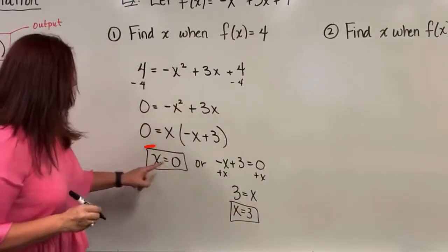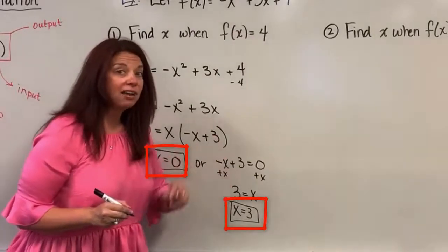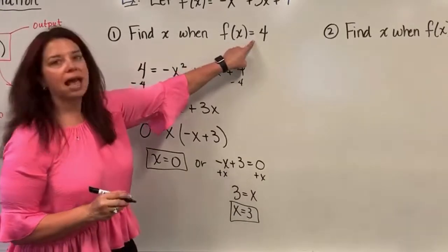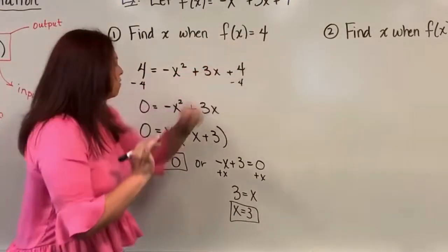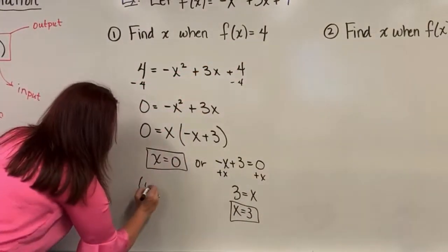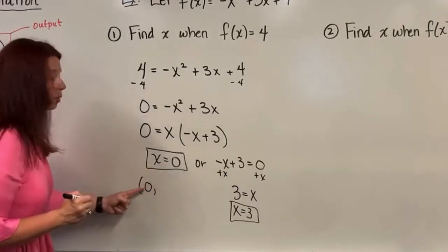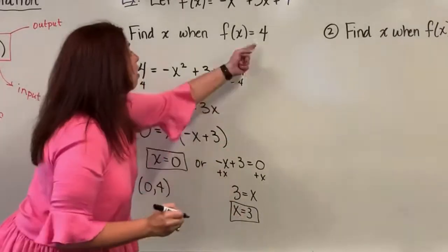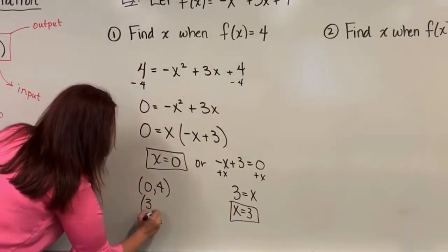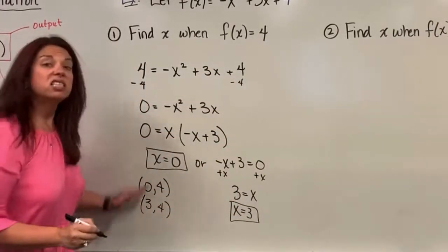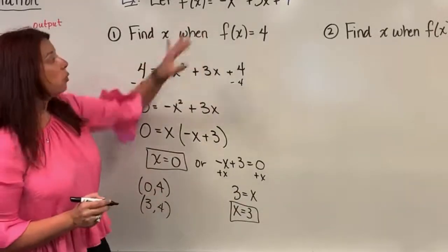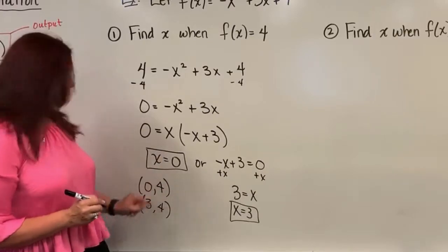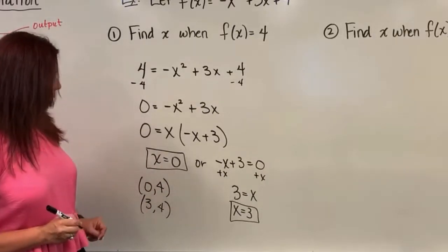So now I have my two input values. Kind of interesting. We got two solutions out of this. Two input values for my one output value of four. If I wanted to write as ordered pairs, I have when x is zero, the input is zero, I have an output of four. And when I have an input of three, I also have an output of four. This still makes this thing, this equation, a function. This is totally allowed for us to use different input values to achieve the same output value.